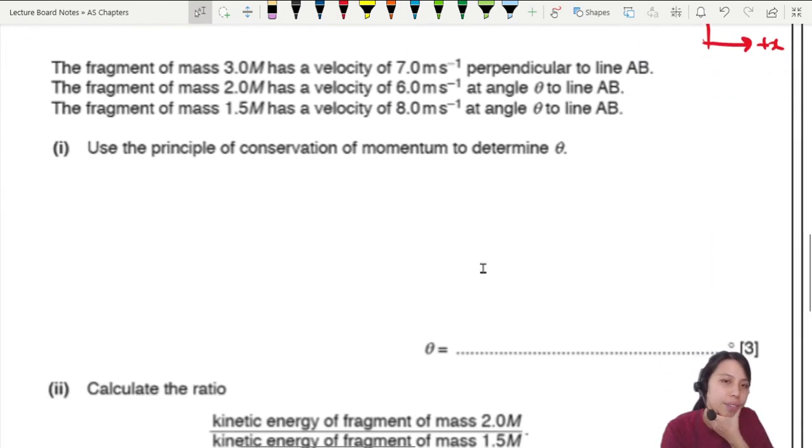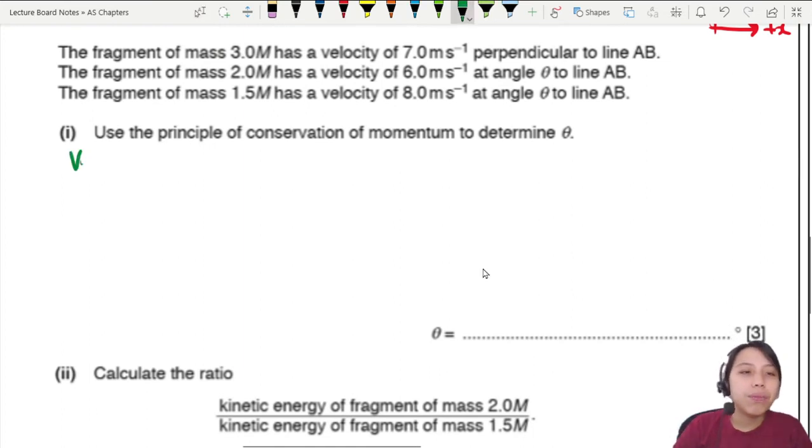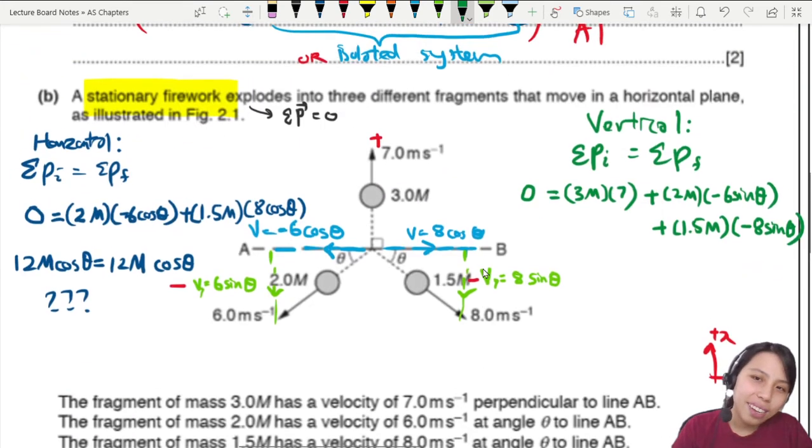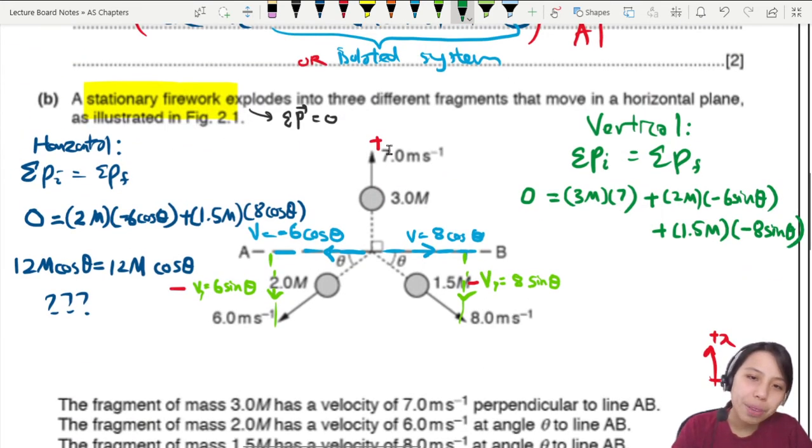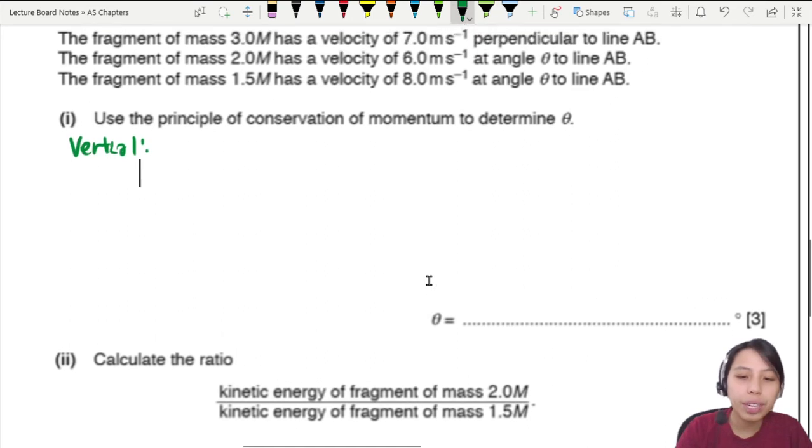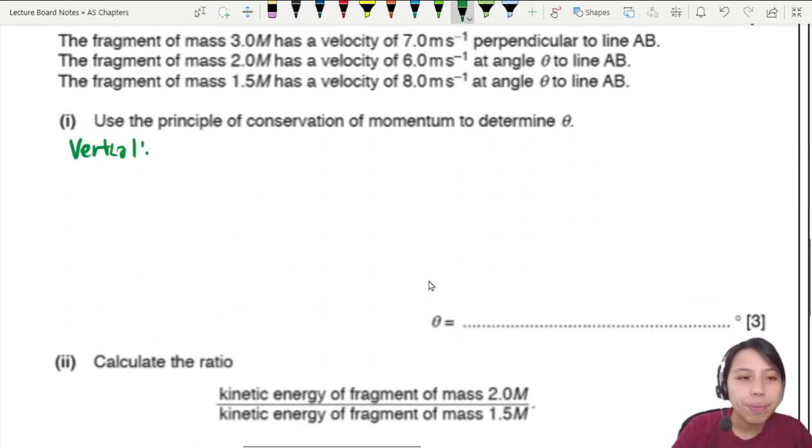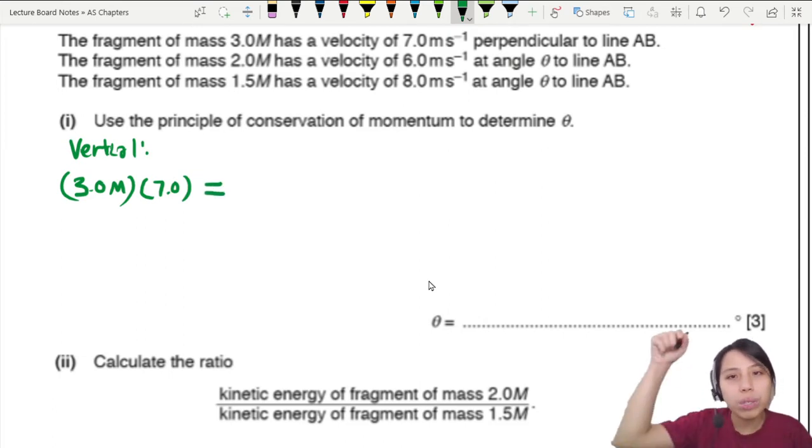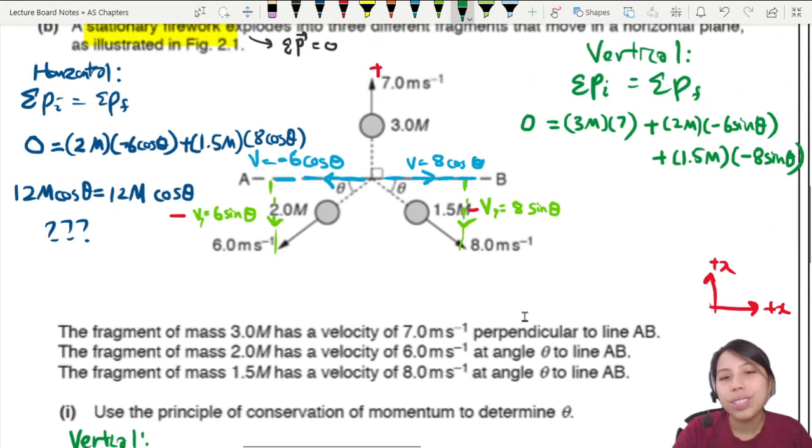All right. We've got plenty of space here. Let's write out for the vertical component only. We have figured out that this thing moving up should equal to the both of these moving downwards, the momentum moving downwards. So I'm going to shortcut and say, who's moving up? The one moving up, we have 3.0 M times seven. That's the momentum upwards. Equal to all those that's moving downwards. So we have two of those, which is this one going down and this one going down.